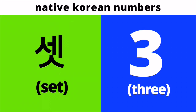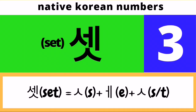Next is number three. The native Korean version of number three is Set. Pronounce it with me: Set. If you would notice, Set is spelled with a Siot character at the third position, but take note that this is pronounced with a T sound. We need to draw a Siot character followed by an E character followed by another Siot character. Since the Siot character is located on the third position of the syllable, it will have the T sound. Therefore this is pronounced as Set and not Ses. That is number three: Set.